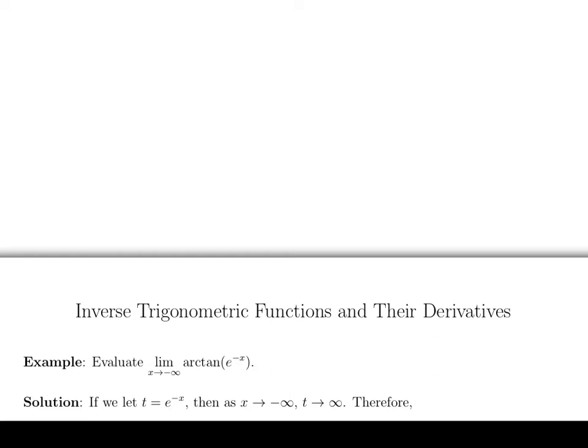So now what we should see is that as x goes to minus infinity, then t, this expression here, has to be going to positive infinity because that exponent is going off to positive infinity. e to a very large positive number is very large.